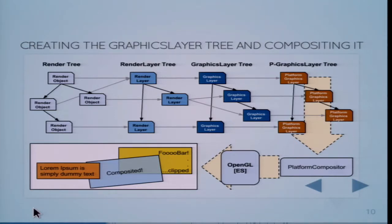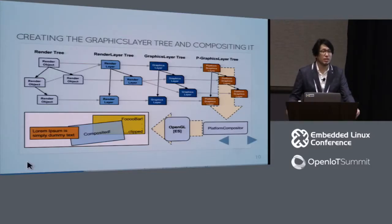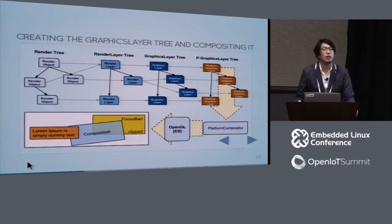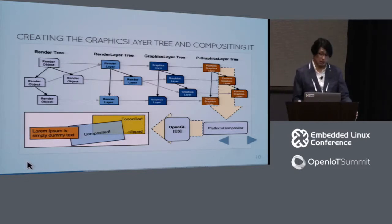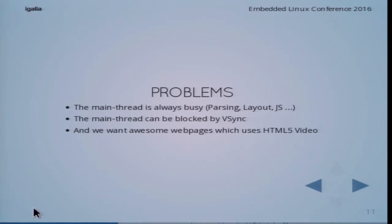The problem is that originally this was a single-threaded operation, heavily optimized for a single thread. It was not a big problem on the desktop, because desktop CPUs are quite powerful. But the problem is when using it in embedded systems, where the CPU is quite slow compared to desktop. That makes all operations really slow — layout, parsing, JavaScript execution, and rendering — quite slow in embedded systems.